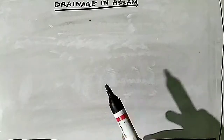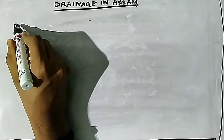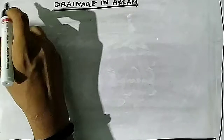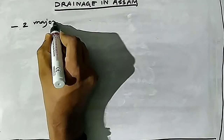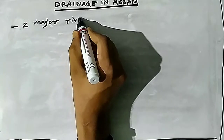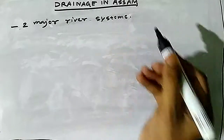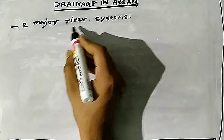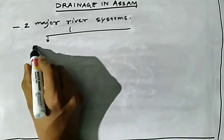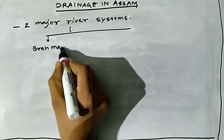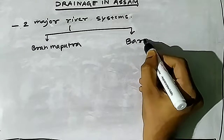Hello everyone, welcome to Civil Go. We are continuing the GS5C levels of FPSC. Today we will discuss the drainage system in Assam from the exam point of view. This topic is very important because we see more than two questions, or at least one question, from this portion. The drainage of Assam falls mainly into two systems: the Brahmaputra and the Barak.